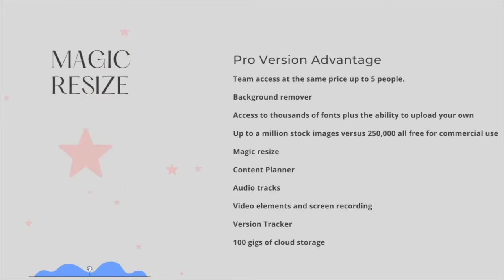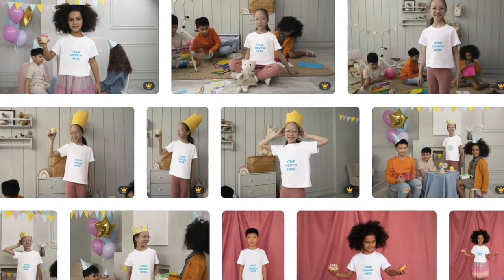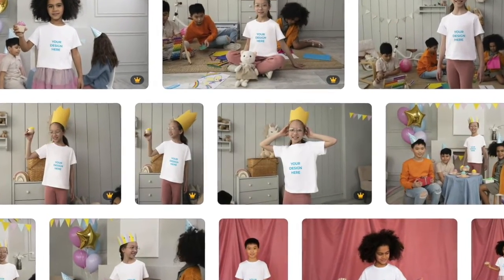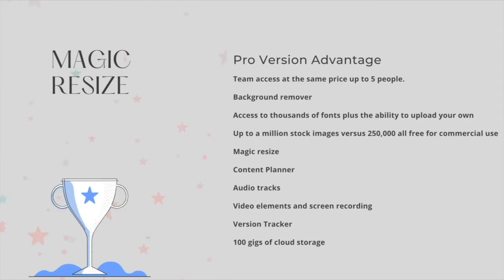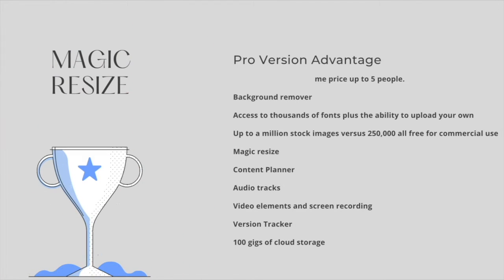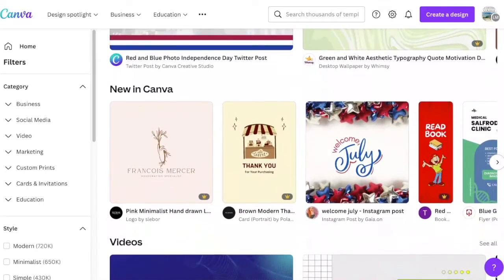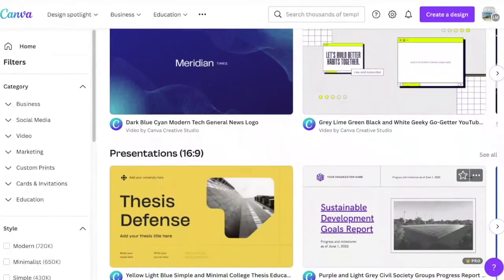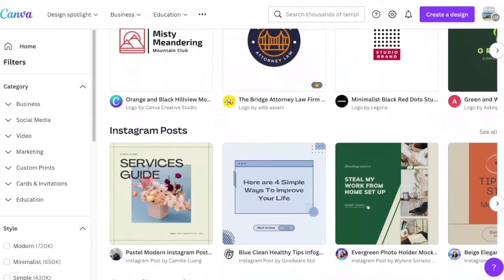In addition to print layouts, you can do video, audio tracks, and presentations with up to 100 pages in your documents. You can mock up t-shirts and designs on mugs, hook up data from a spreadsheet to create graphs, and they keep adding new features all the time. They also have professionally designed templates in almost any subject, using those basic design principles. So let's get started.